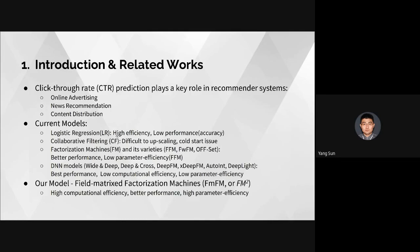Factorization machines and their varieties — like field-aware FM and field-weighted FM — are the most popular models nowadays. Besides single features, they also consider degree-two features, that's the pairwise cross features. They achieve better performance and speed, but models like FFM have too many parameters.